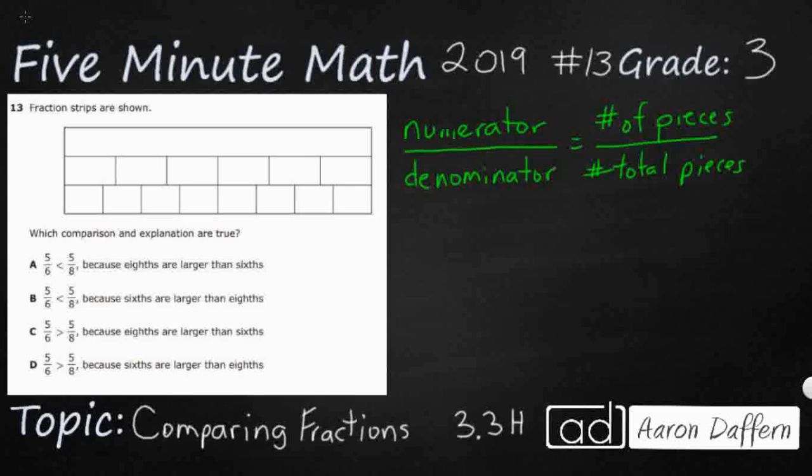This very top row is just 1, because that is the entire row. So that is 1. Each of these fractions is going to be a fraction of that 1.